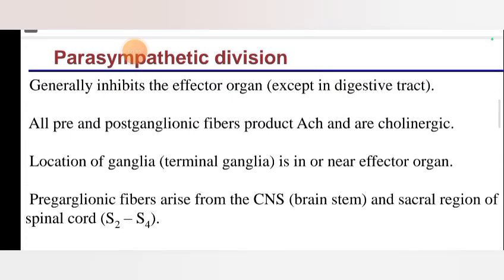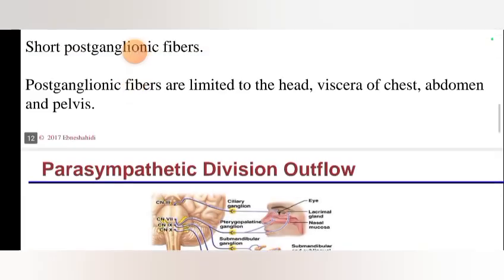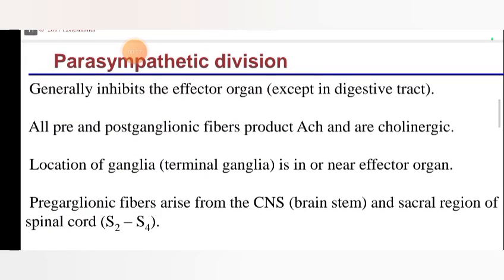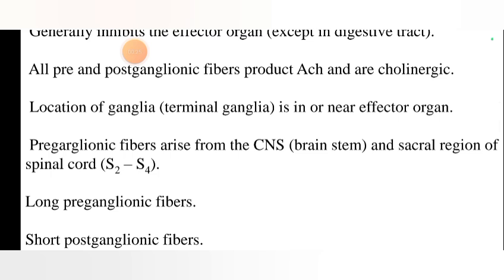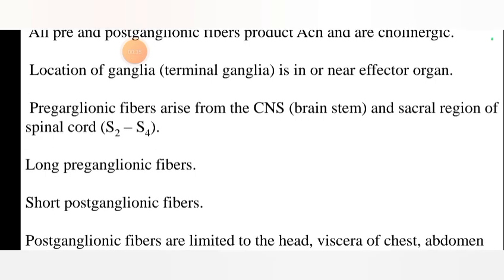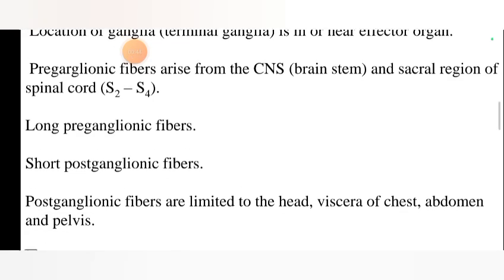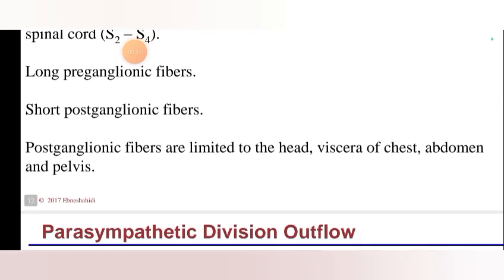The next one is the parasympathetic division. The parasympathetic division generally inhibits the effector organ, except in the digestive tract. All pre- and post-ganglionic fibers produce acetylcholine and are cholinergic. Location of ganglia: terminal ganglia is in or near the effector organ. Pre-ganglionic fibers arise from the CNS — the brain stem and sacral region of the spinal cord — resulting in long pre-ganglionic fibers and short post-ganglionic fibers.